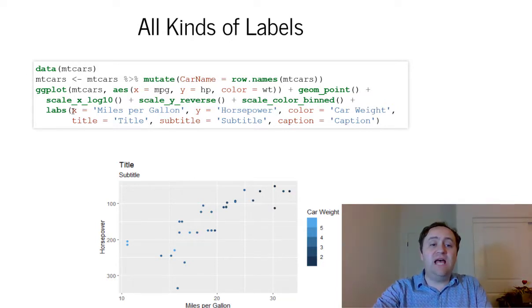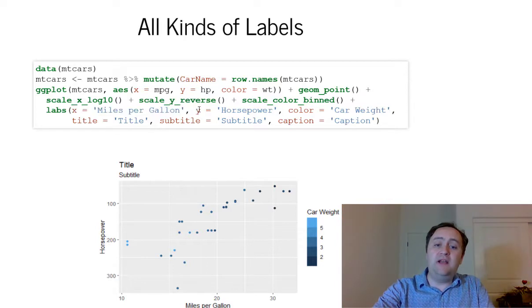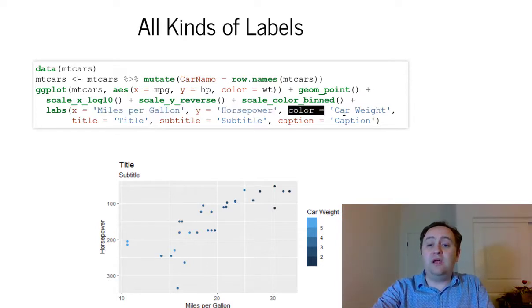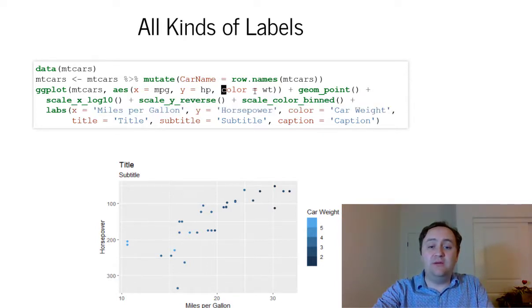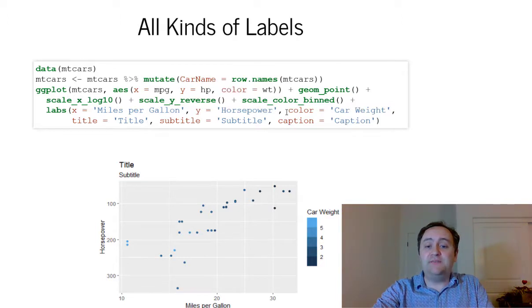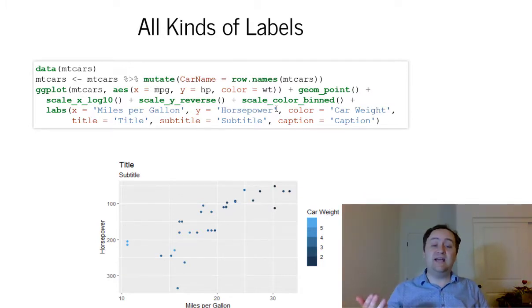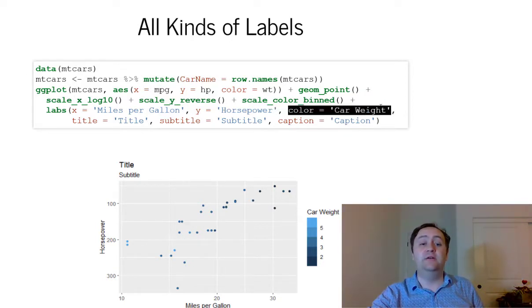So here's the labs function. I want my x-axis to be labeled miles per gallon. I want the y to be horsepower. I want the color. I've got a color axis here where I'm coloring separately by weight. I want that to be car weight. So notice that that titles the legend over here, right? So if you have another axis besides x and y, commonly you'll get a legend accompanying your graph. If you want to title that legend, you can use the labs function and just give it a title there.